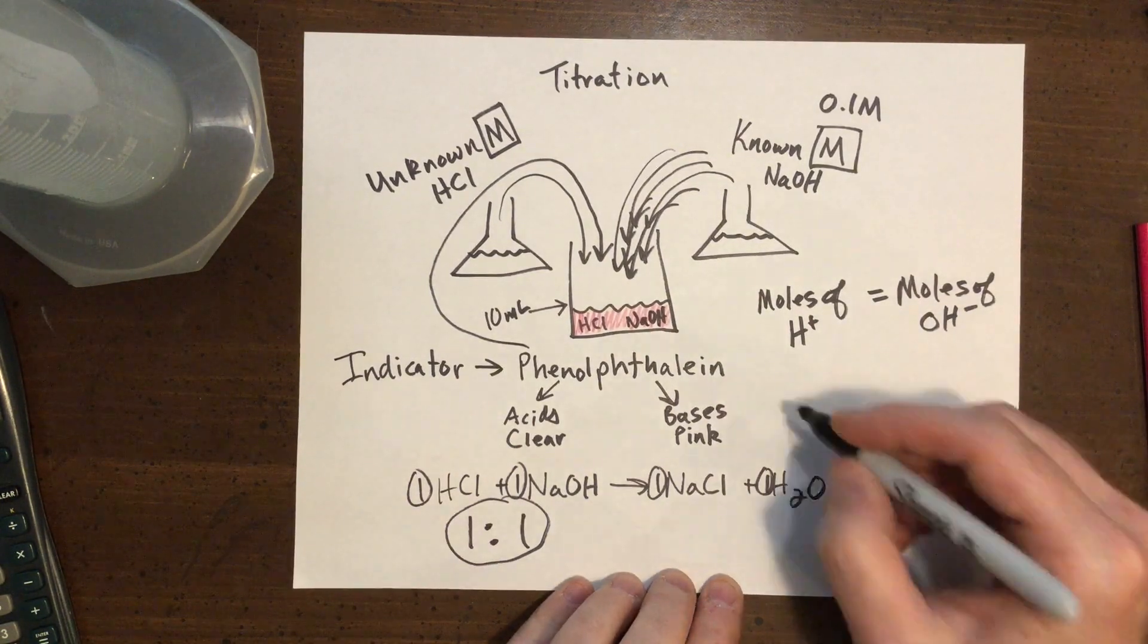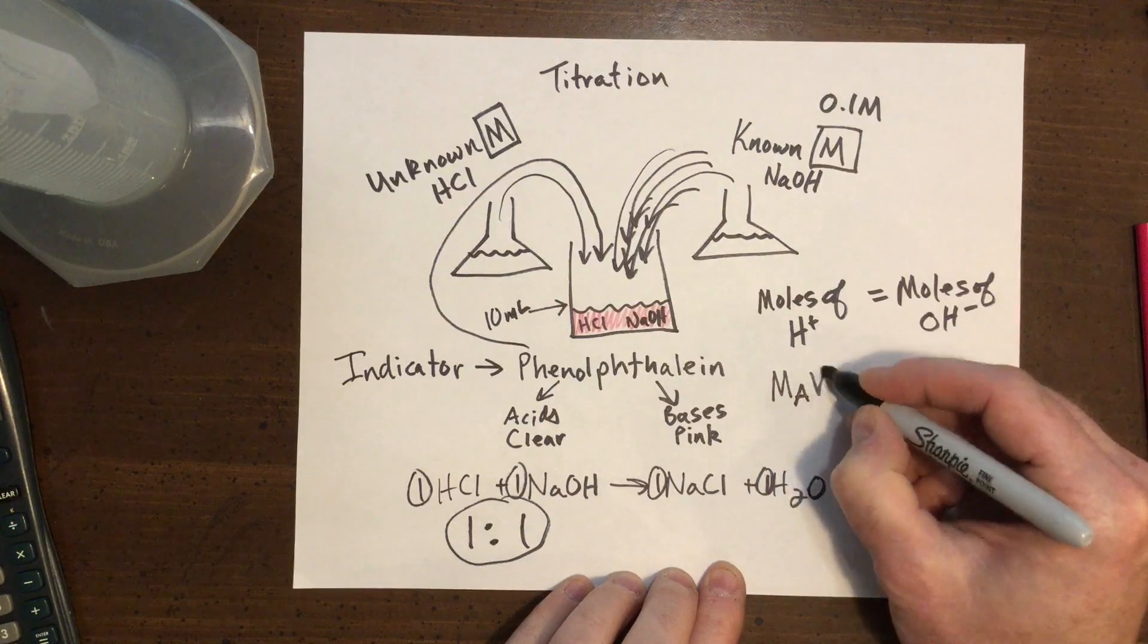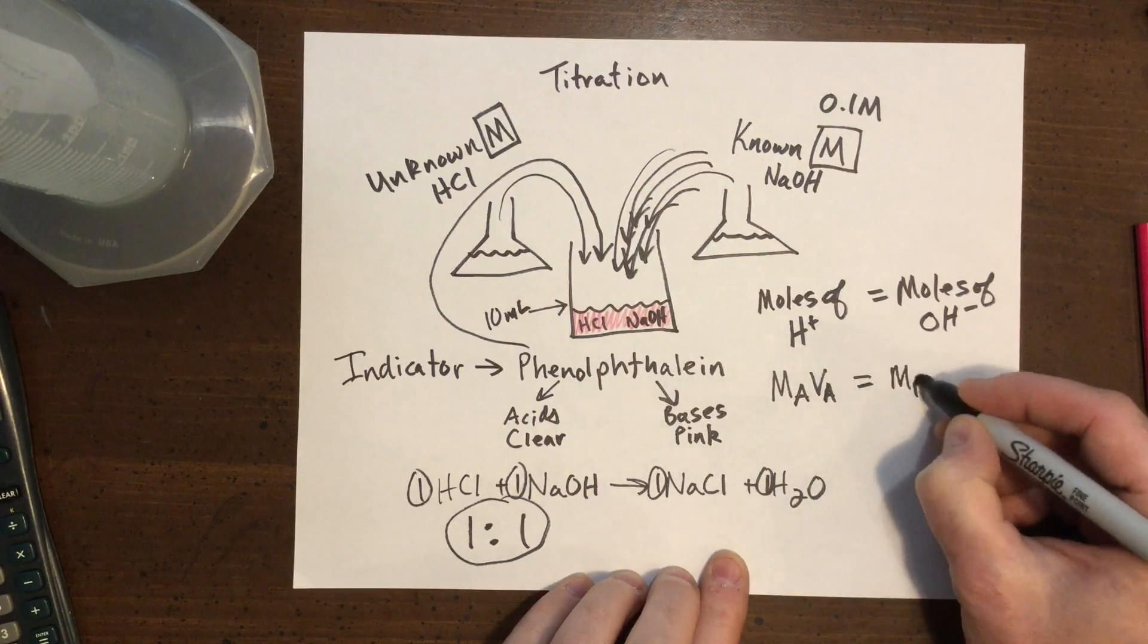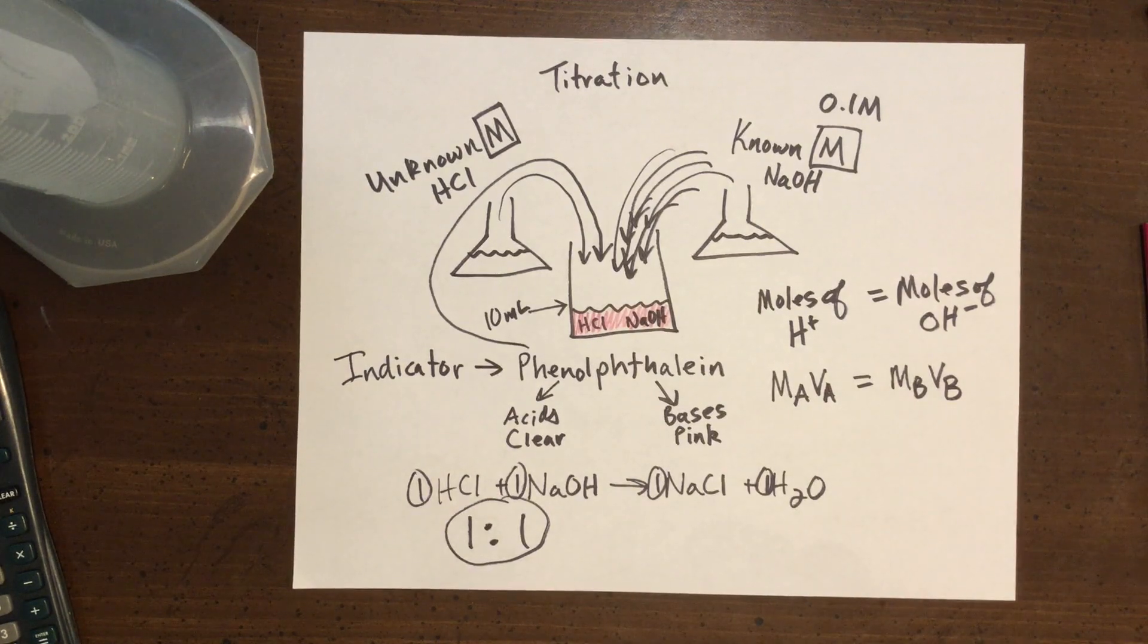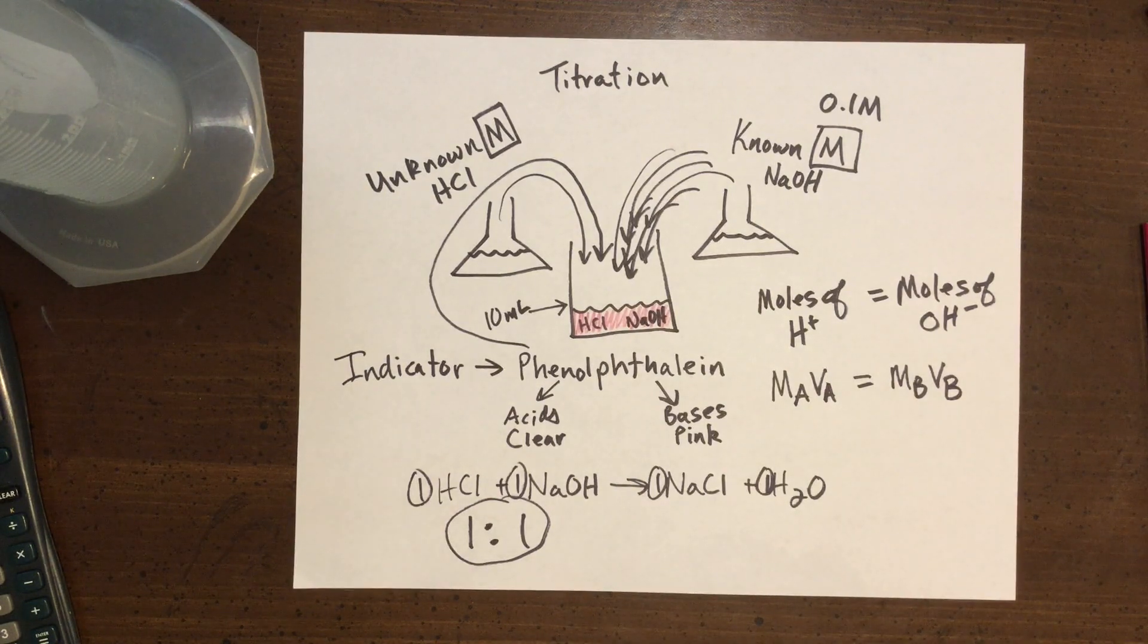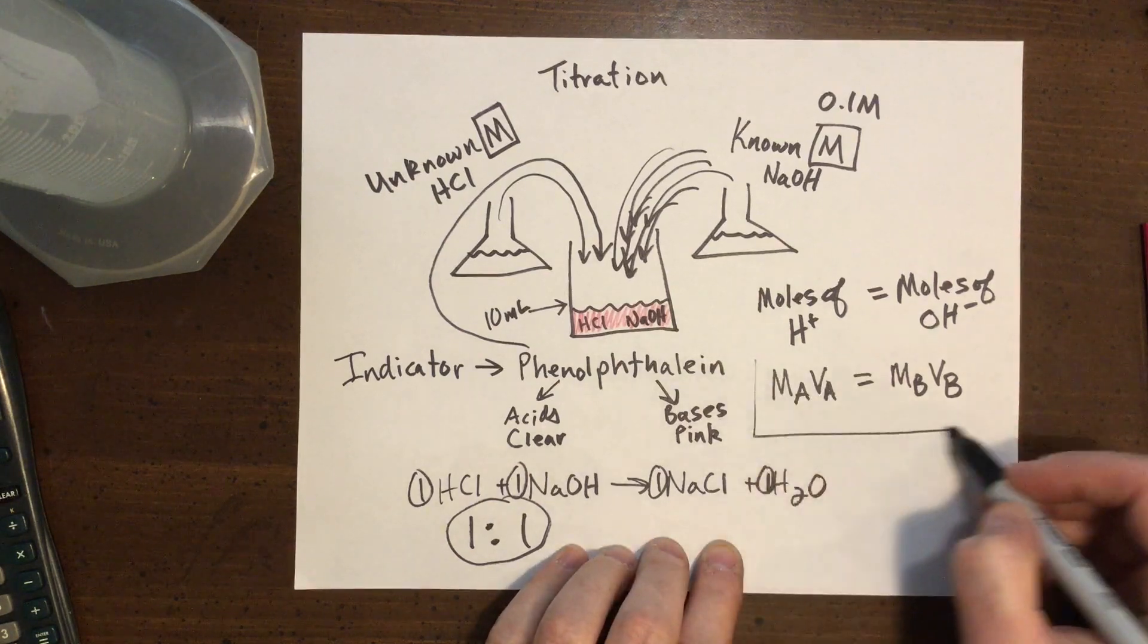Now remember, this is true because of that one-to-one ratio. Because of that one-to-one ratio, we can use this shortcut method. To calculate moles using solutions, we have to take the molarity times the volume. So we can go ahead and use this formula. MAVA equals MBVB. The A's standing for acid. The B's stand for base.